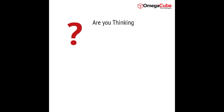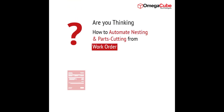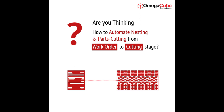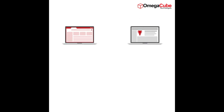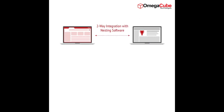Are you wondering how to automate your nesting operations, from work order to parts cutting stage? Omega QBRP can be easily integrated with industry standard nesting applications, such as Sigma Nest and Pro Nest.